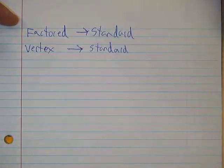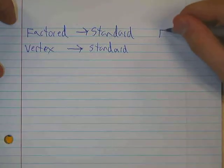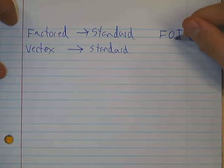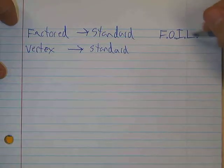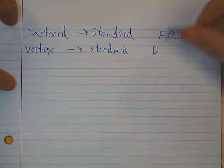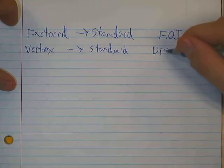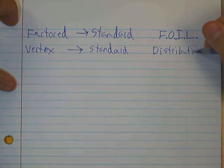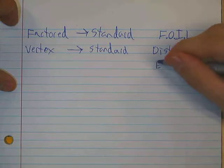A lot of times you'll hear what I'm going to do called FOIL, and it's really just an anagram in order to help you remember what to do. In reality, it's actually more appropriately called the distribution of expressions.